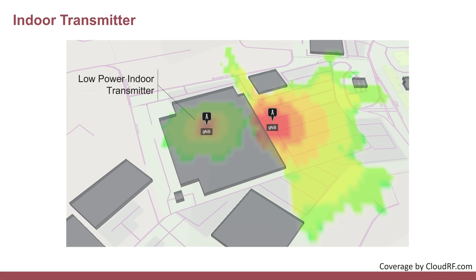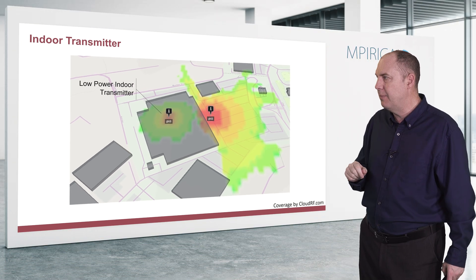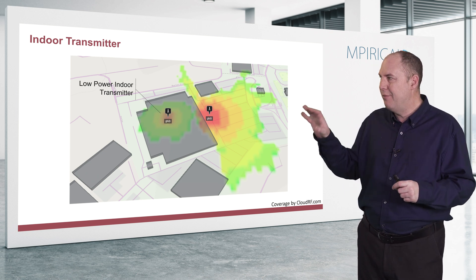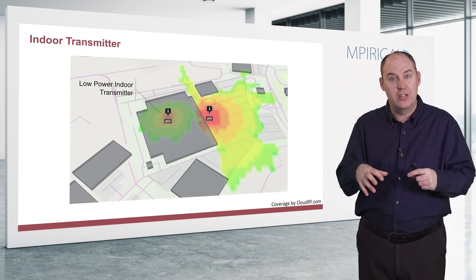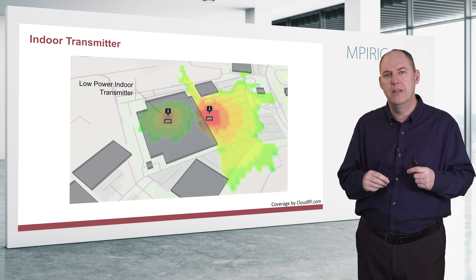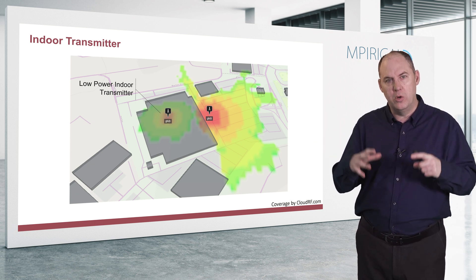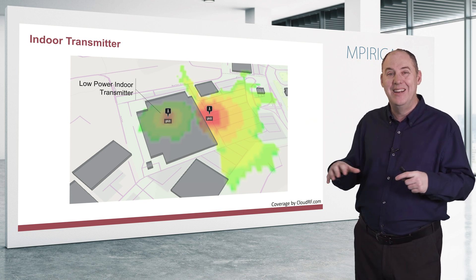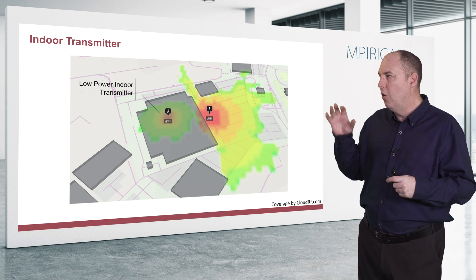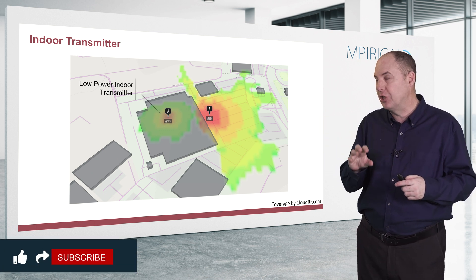The key thing is this is a low-power indoor transmitter — it's low power but does a better job than the outdoor cell. The software doesn't know exactly the internal makeup of the building, so it assumes omni-directional propagation equally in all directions. In reality, that's not typically the case. It depends on the internal architecture of the building — whether it's single-story or multi-story, and objects within the building all factor into coverage.